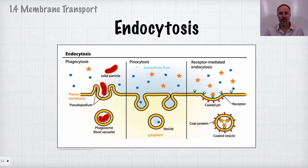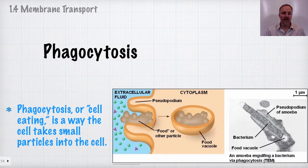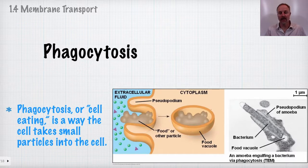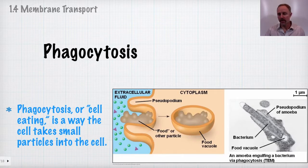There are three types of endocytosis: phagocytosis, pinocytosis, and receptor-mediated endocytosis. Phagocytosis is essentially 'cell eating' — the cell takes in solid particles. An amoeba is a classic example: the cell membrane invaginates around the particle to form a food vacuole, which then fuses with a lysosome to digest the material. You can see an amoeba wrapping its pseudopods around a food particle and bringing it in as a food source.